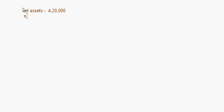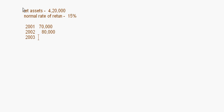Suppose I have a question where the net assets of the firm are given as 4,20,000, and the normal rate of return is 15%. The profits for the 5 years are: 2001 is 70,000; 2002 is 80,000; 2003 is 90,000; 2004 is 90,000; and 2005 is 1,20,000. You have to find out the goodwill by the capitalization method.